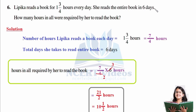So we multiply 7/4 by 6. Cancellation: 2 into 4, 3 into 6, giving 7 times 3 is 21 over 2. Converting to mixed fraction: 2 tens are 20, remainder 1, giving 10 and 1/2 hours. So Lipika takes a total of 10 and a half hours to read the book.